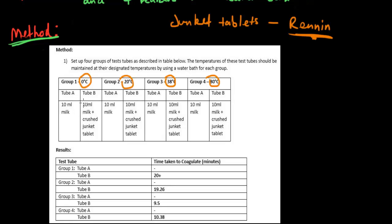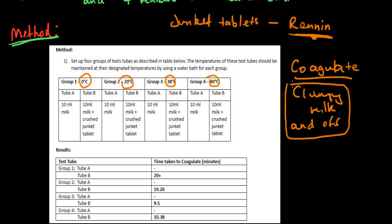By coagulate, I mean curdle. You know when milk gets all clumpy and off? That's when it's curdled. It's not in a liquid state anymore. We finish this off by recording how long it takes for the curdling to happen.